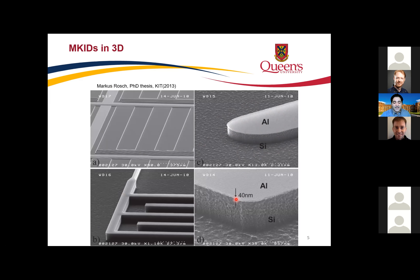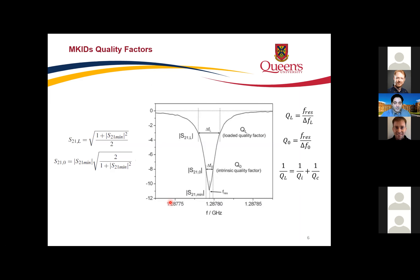That is why it is better to use ALD — atomic layer deposition — with angstrom-level precision. For the optical range, MKIDs are better fabricated using electron beam lithography, because the gaps between lines can be on the order of 100–200 nm, which is not achievable with optical lithography. For the millimeter range, the pixel dimensions are on the order of millimeters, so optical lithography is sufficient.